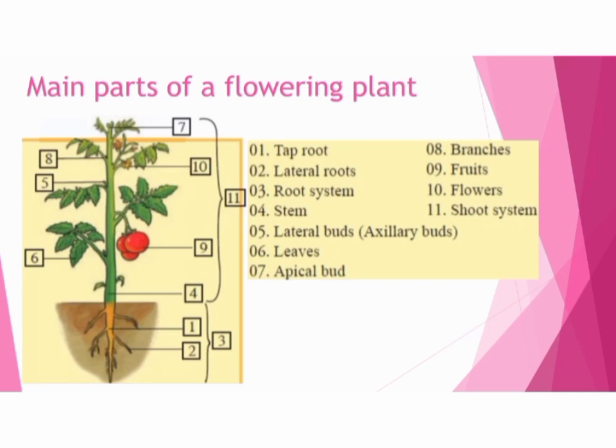So now let's talk about the main parts of a flowering plant. Plants are different from each other, but they have some common parts such as the tap root, lateral roots, root system, stem, lateral buds, leaves, apical buds, branches, fruits, flowers and the shoot system.